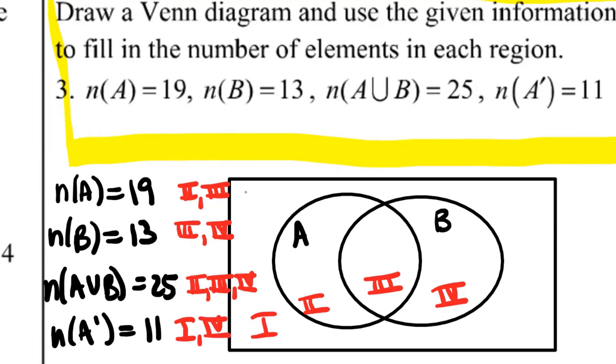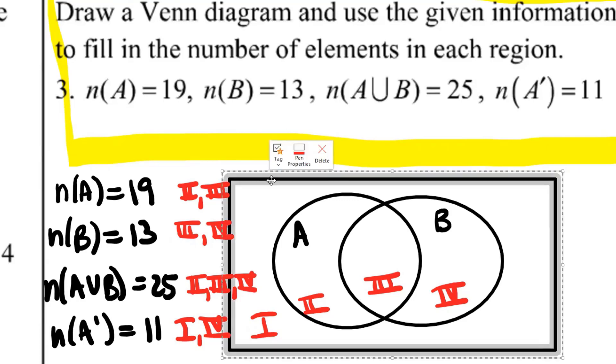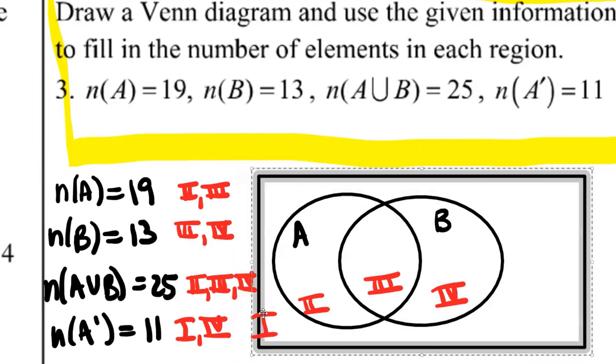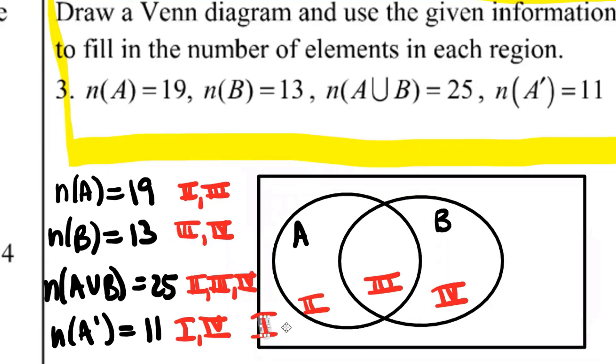We have a problem because notice that all of these are describing more than one region. And I really need to know how many is in just one region. Whenever this happens to you, most likely they want you to use something called the cardinal number formula.